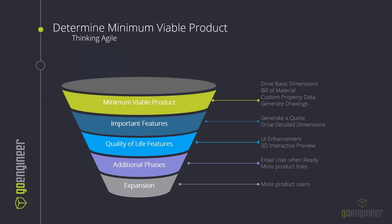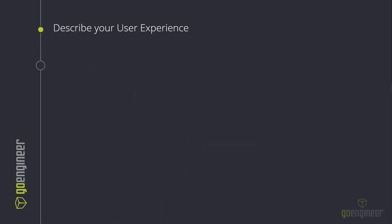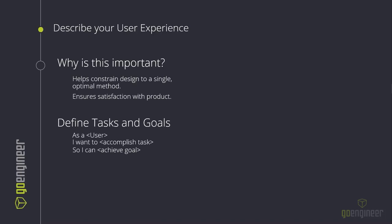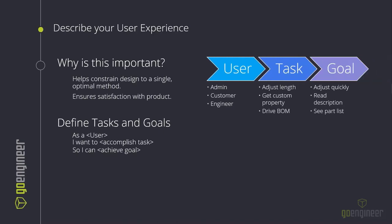Additional phases might include expanding product lines or increasing product users — whether that's an internal engineering team, sales reps offloading quoting effort, or empowering customers to make decisions through an intuitive tool like DriveWorks Pro. Once we've established our MVP, we also need to talk about the secret ingredients that make it up. It starts by describing your user experience, which is critical to do early because it helps constrain your design to a single optimal method and ensures satisfaction when we focus on how the user interacts versus just what technically needs to happen.